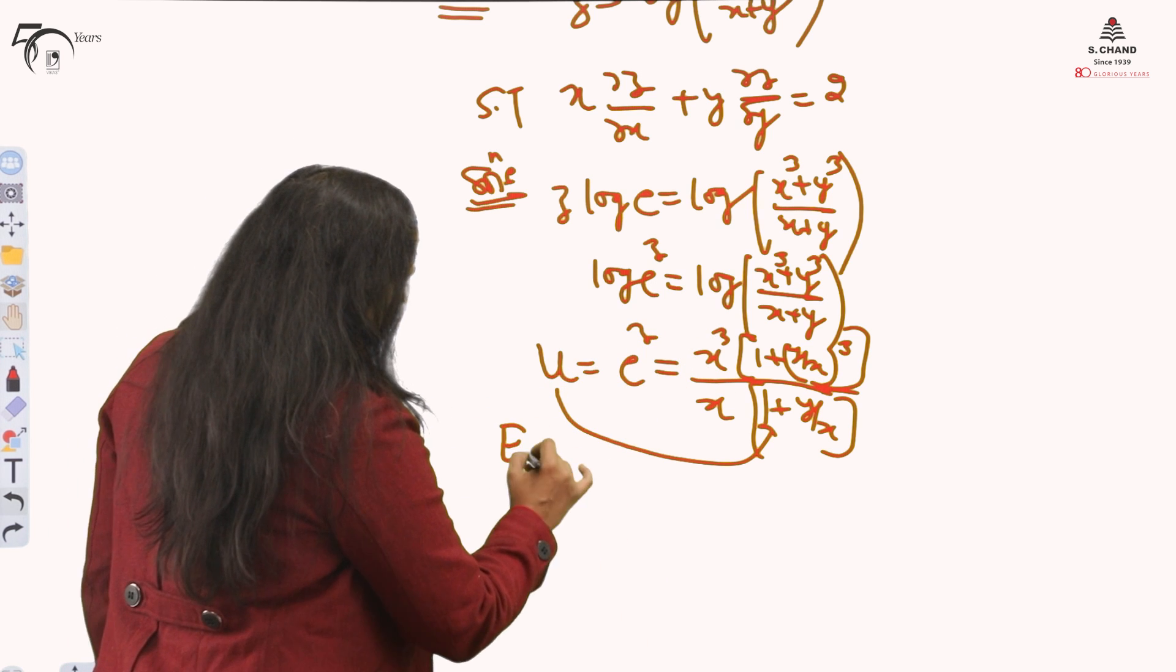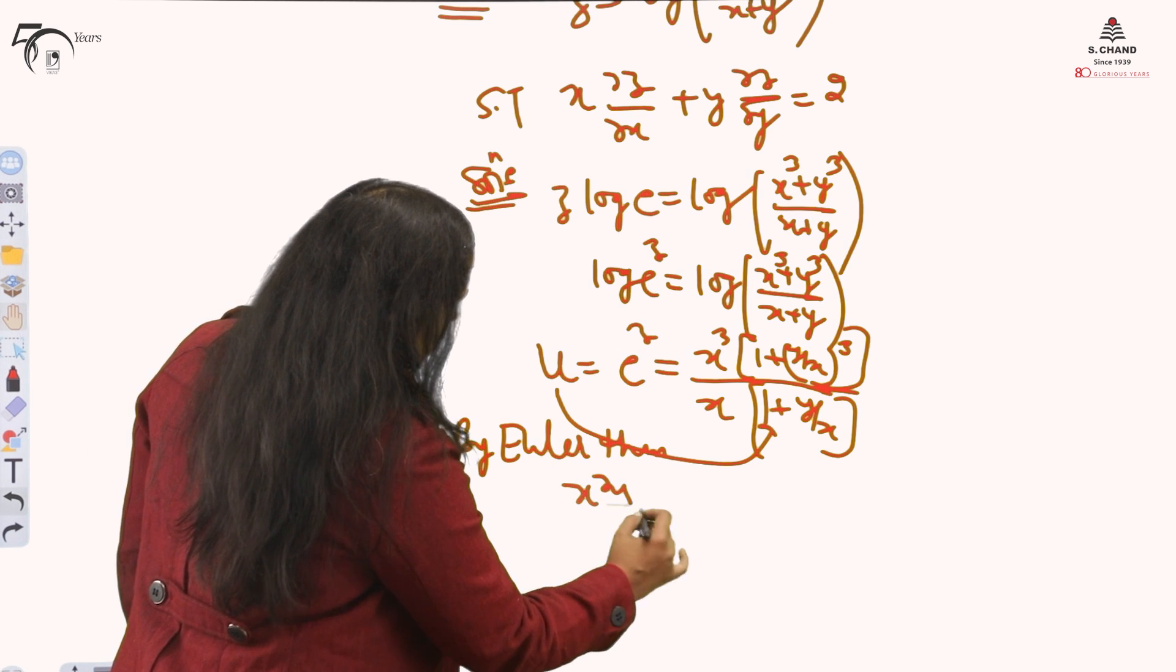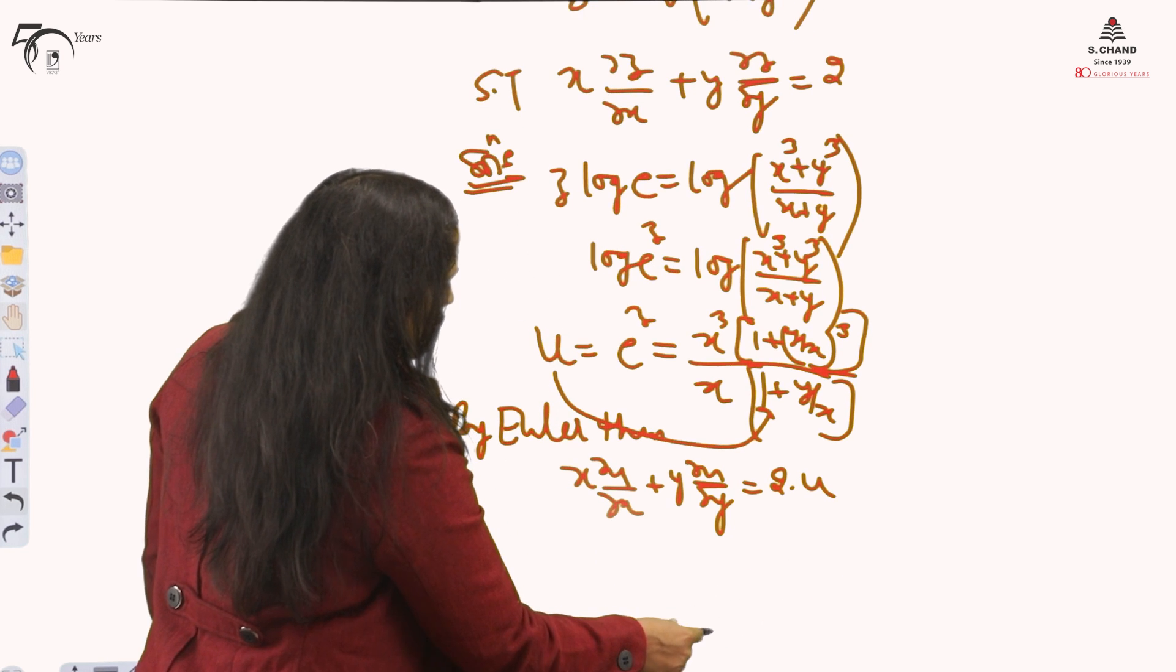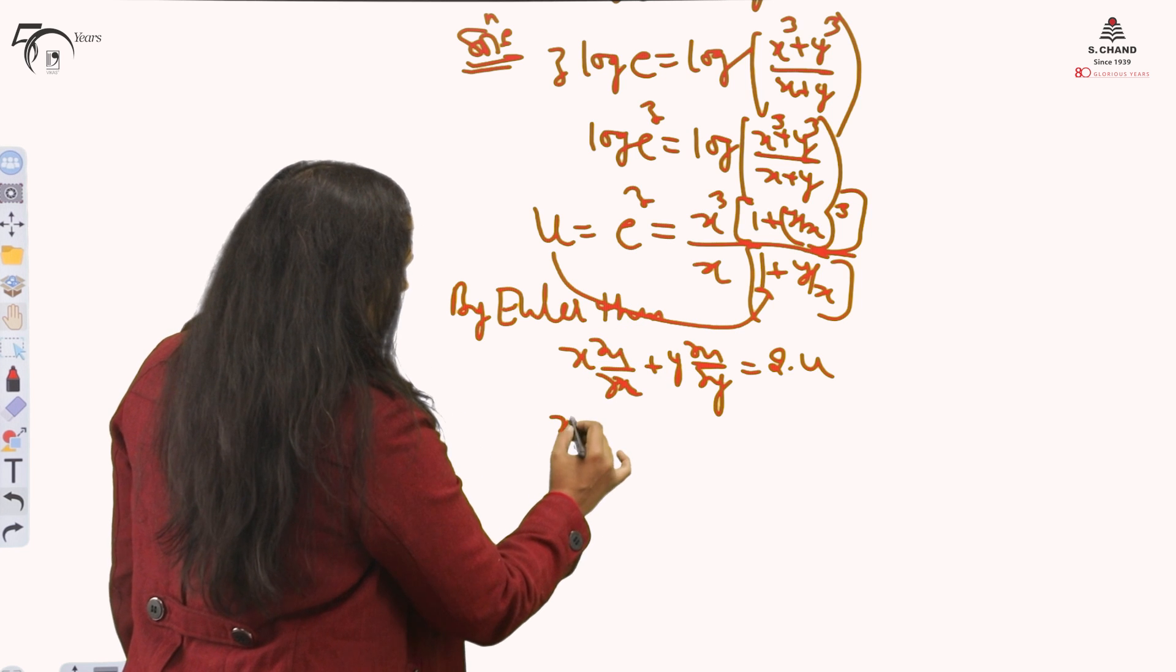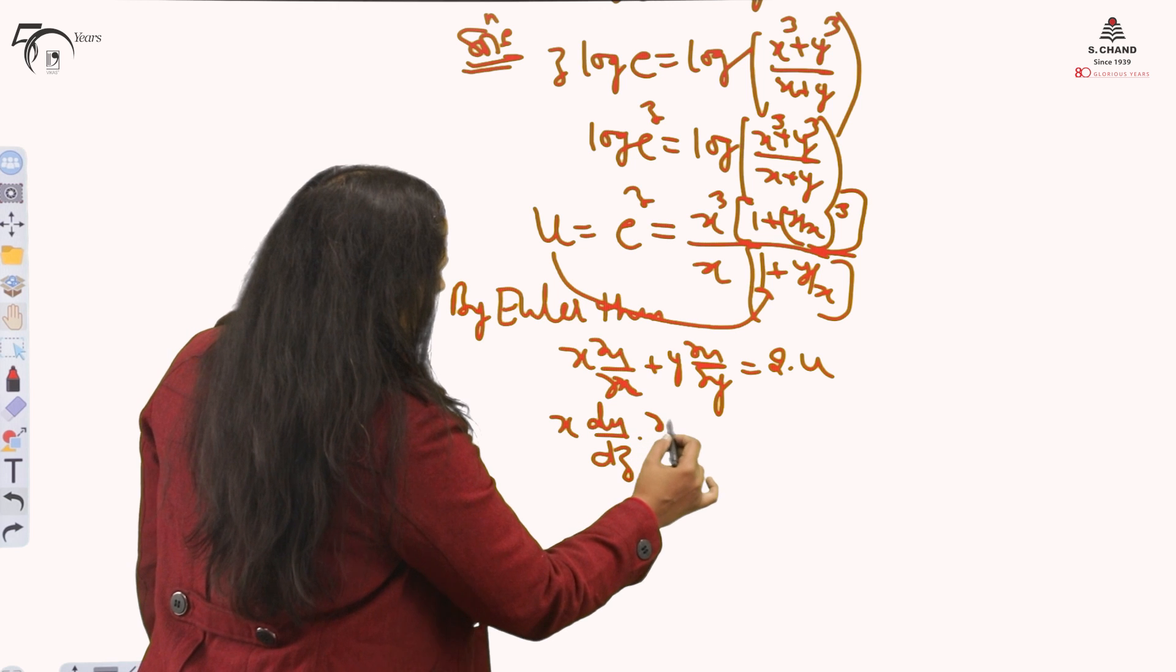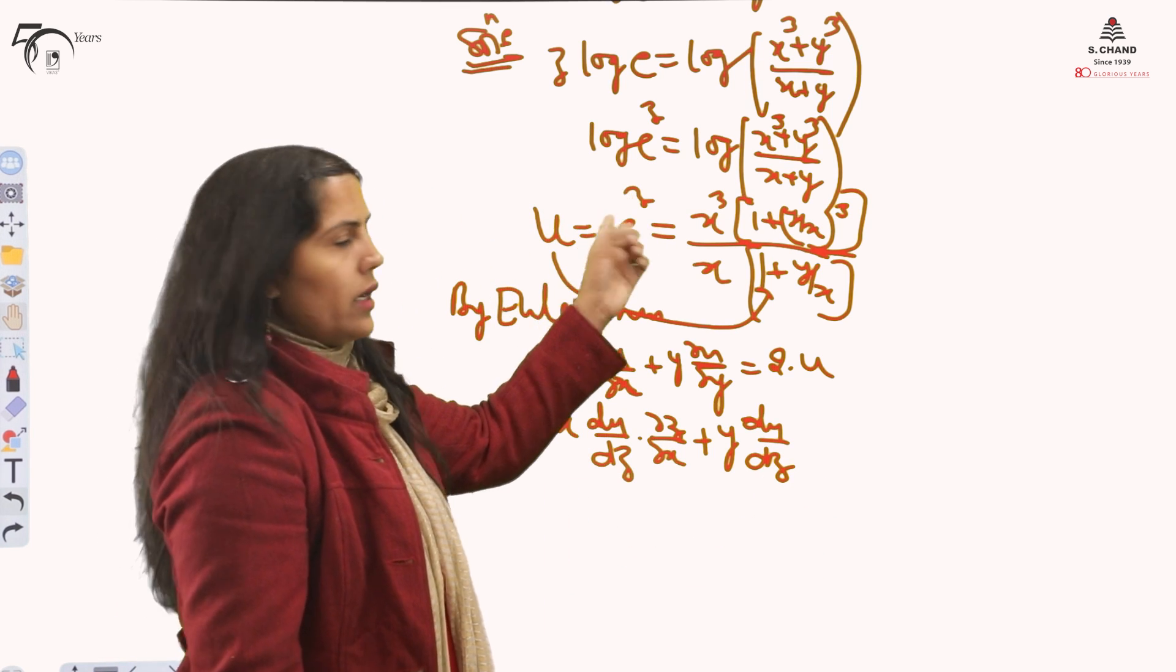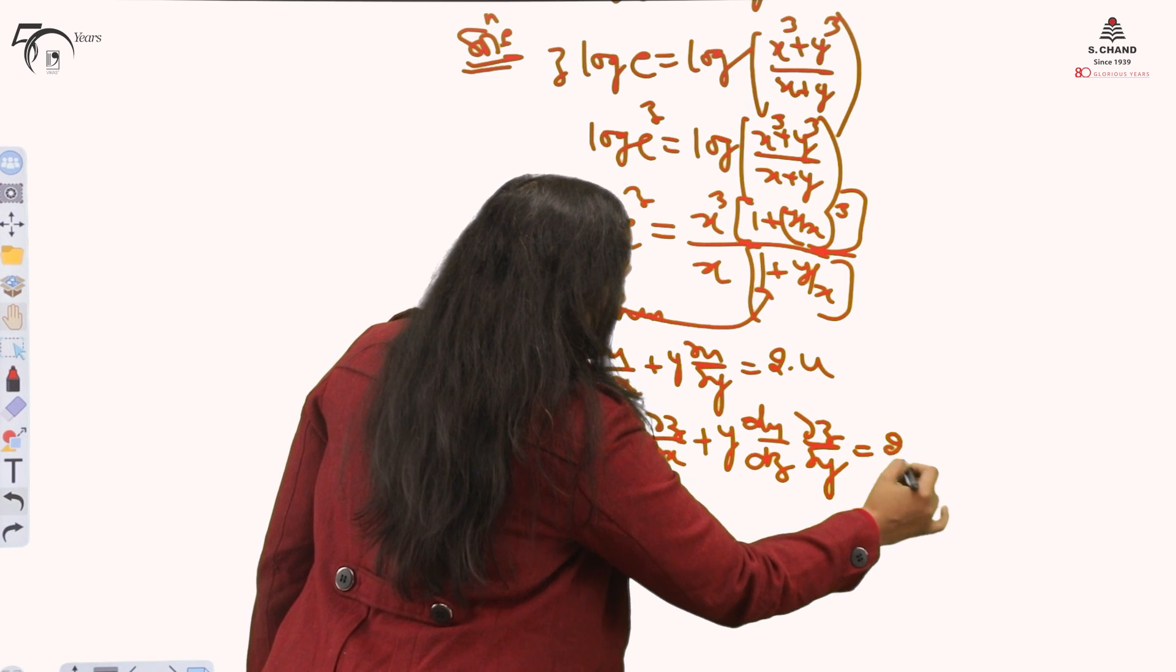How to apply Euler's theorem? By Euler's theorem we got x del u by del x plus y del u by del y is 2 into u. And put the values. x del u by del x, so first you differentiate du by dz, the same we did in the previous case, and then del z by del x, plus y du by dz.